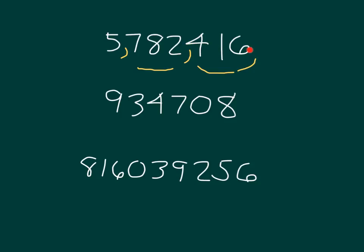That number is written as five million seven hundred eighty-two thousand four hundred sixteen. How many thousands are in this number? There are actually five thousand seven hundred eighty-two thousands in that number.